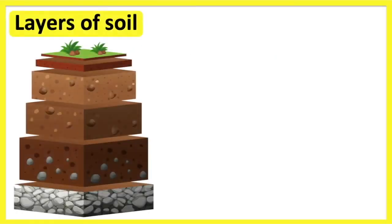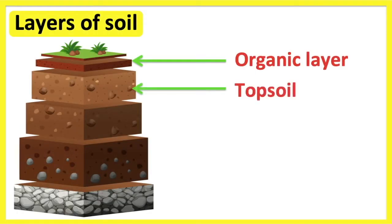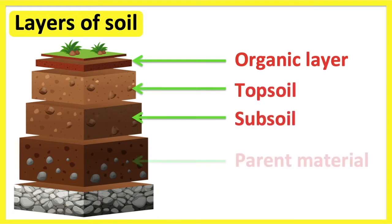There are five layers of soil. These include the organic layer, topsoil, subsoil, parent material, and bedrock.